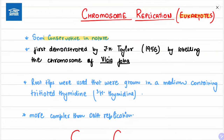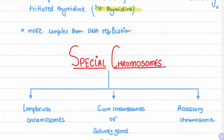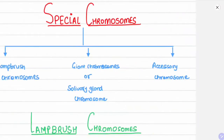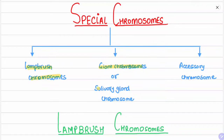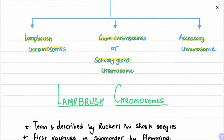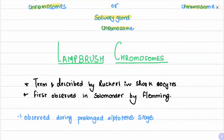Chromosome replication in eukaryotes is semi-conservative in nature, similar to DNA replication. It was first demonstrated by J.H. Taylor by labeling the chromosomes of Vicia faba with tritiated thymidine. Special chromosomes are of three types: lampbrush, giant or salivary gland (polytene), and accessory chromosomes. The term 'lampbrush chromosome' was described by Rückert in the shark oocyte, but it was first observed in Salamandra by Fleming.